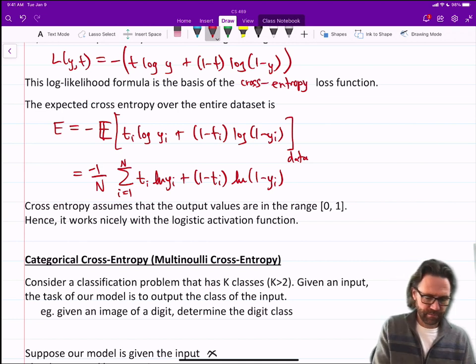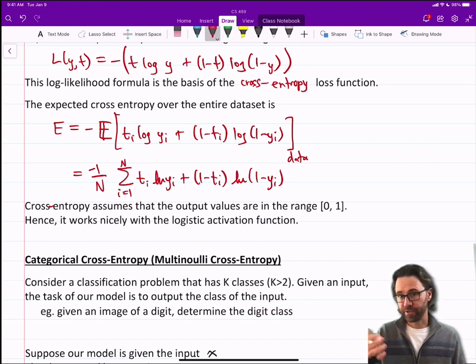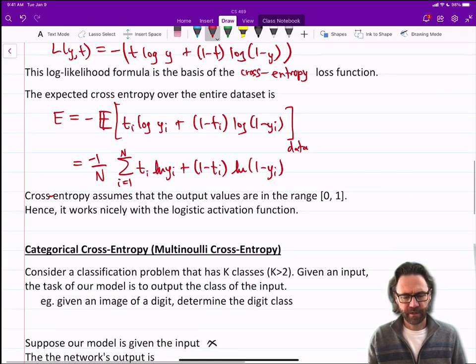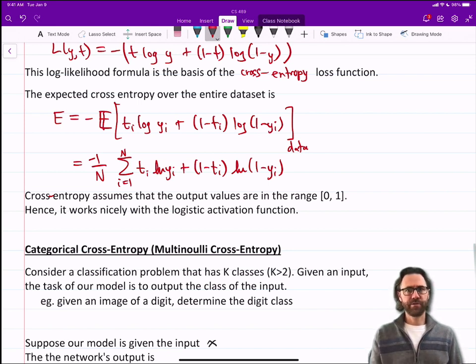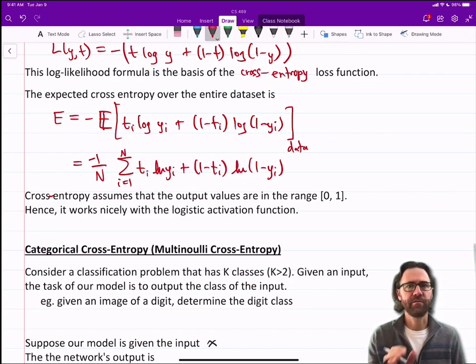Cross-entropy assumes that the output values are in the range 0 to 1, so it works nicely with the logistic activation function. Remember, logistic returns values between 0 and 1. You'll see in the assignments and exercises how nicely those two fit together: the logistic activation function with the cross-entropy loss function.